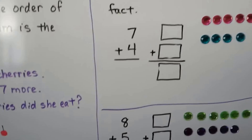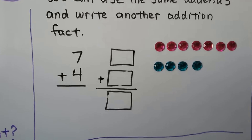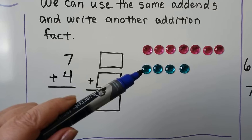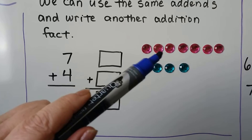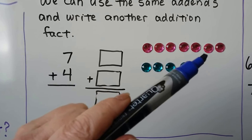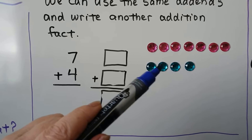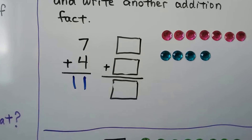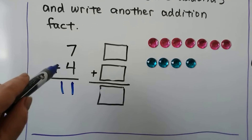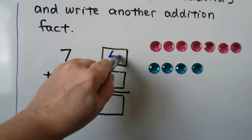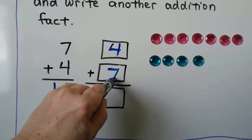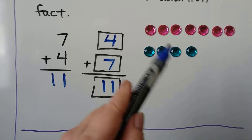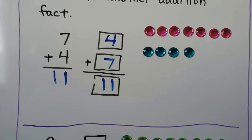We can use the same addends and write another addition fact. 7 pink gems and 4 blue gems is 1, 2, 3, 4, 5, 6, 7, 8, 9, 10, 11 gems. We can change the order of the addends and put the 4 on top and the 7 down here, and it's still 11 gems. We haven't taken any away or added any more. It's the same sum.